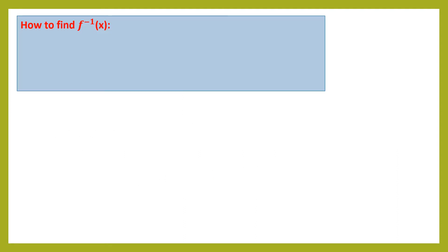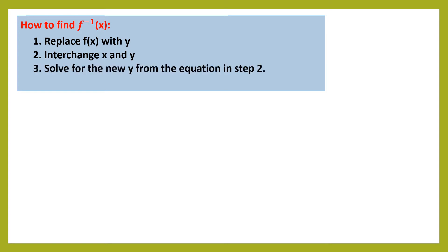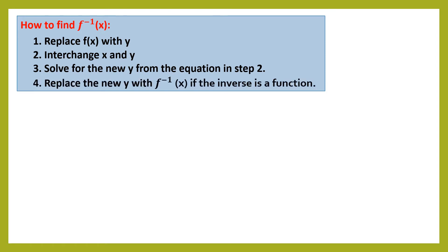How to find f inverse of x? Number 1, replace f of x with y. Number 2, interchange x and y. Number 3, solve for the new y from the given equation in step 2. And number 4, replace the new y with f inverse of x if the inverse is a function.